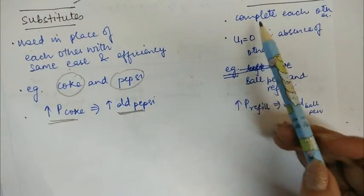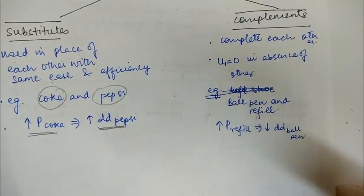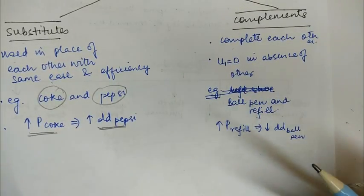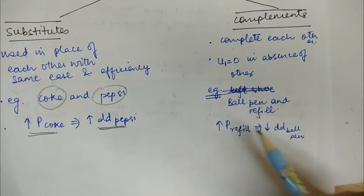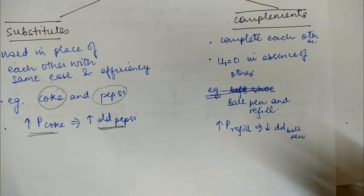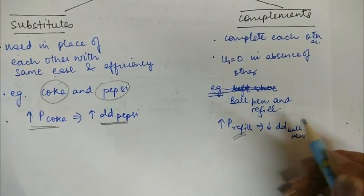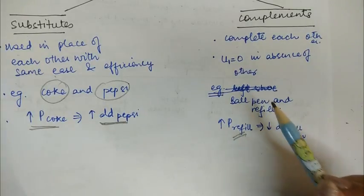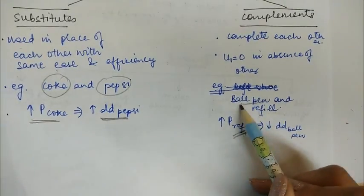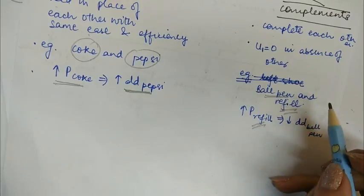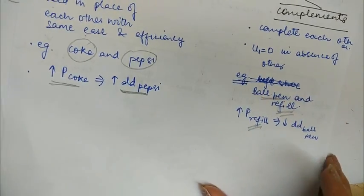In the case of complement goods, these are goods that complete each other — the utility of one becomes zero in the absence of the other. For example, a ball pen body without a refill is of no use, and a refill without a ball pen is also of no use. So the utility of a ball pen becomes zero in the absence of a refill, and vice versa.